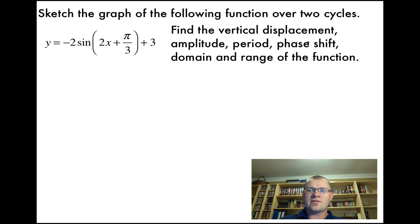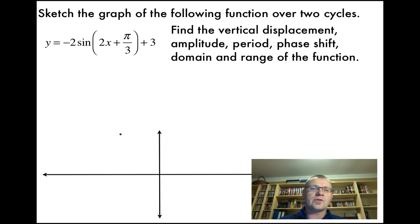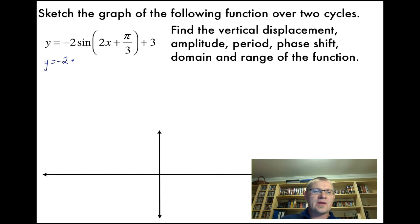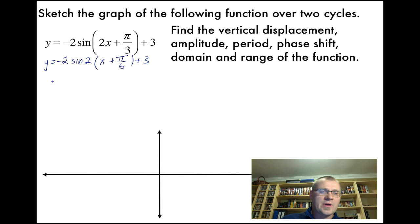We're going to find the vertical displacement, amplitude, period, phase shift, domain, and range of the function. First, we need to make sure we only have x inside the brackets, so we take out a greatest common factor of 2. That leaves us with x + π/6 inside the brackets.